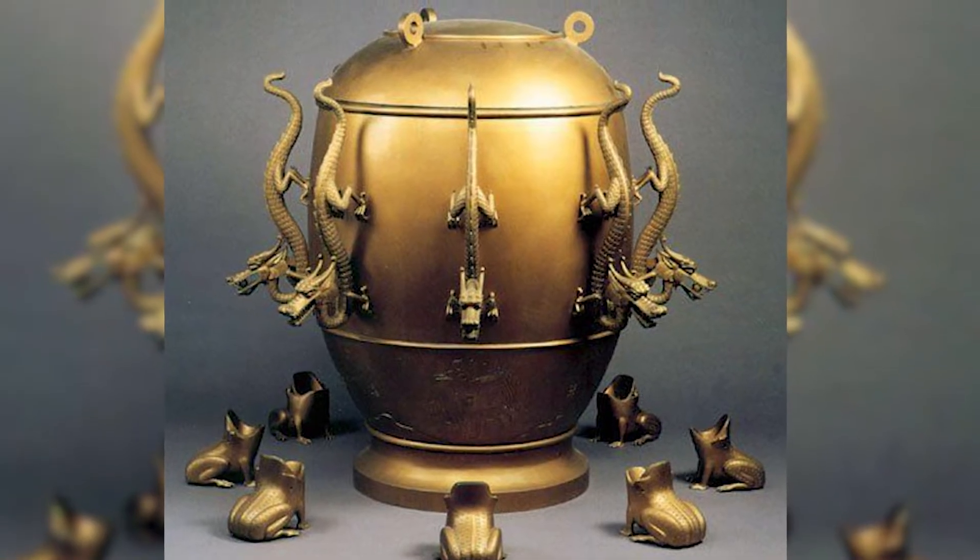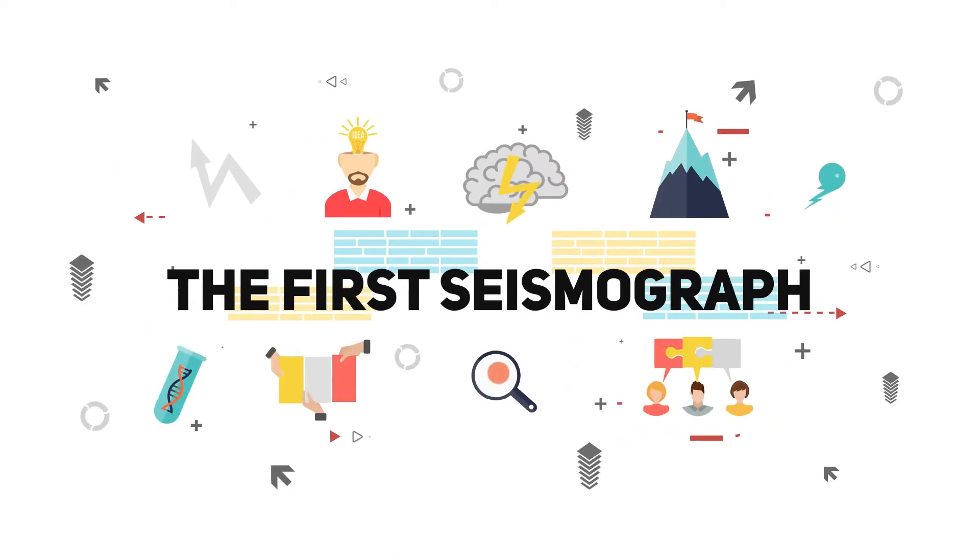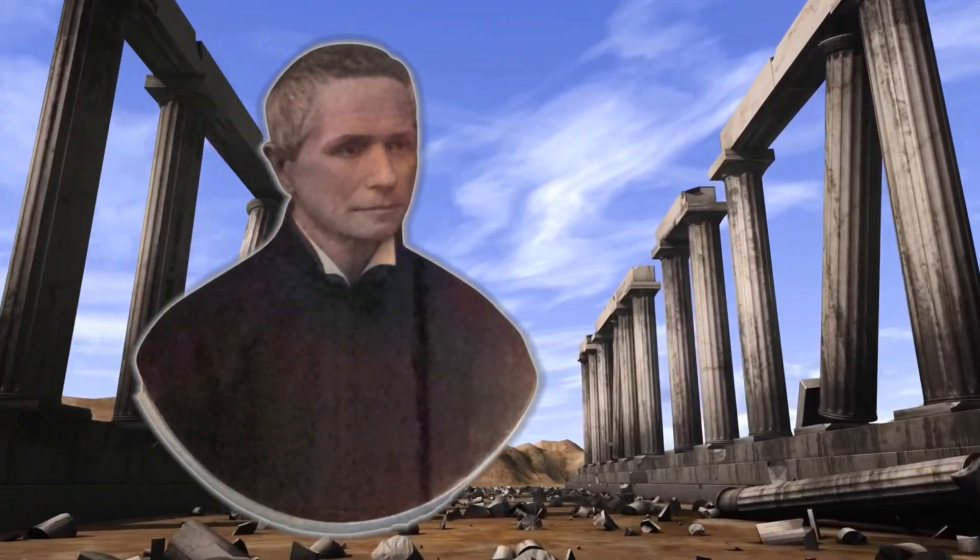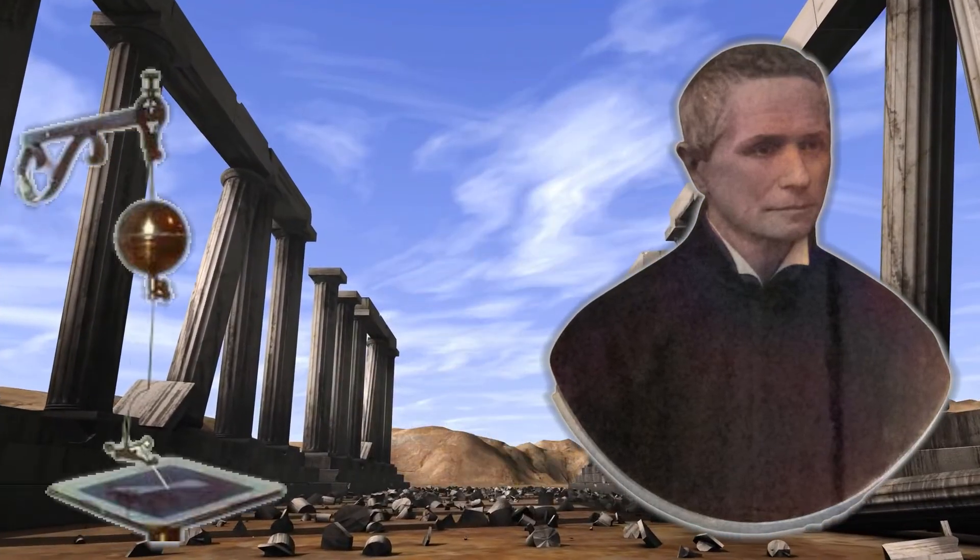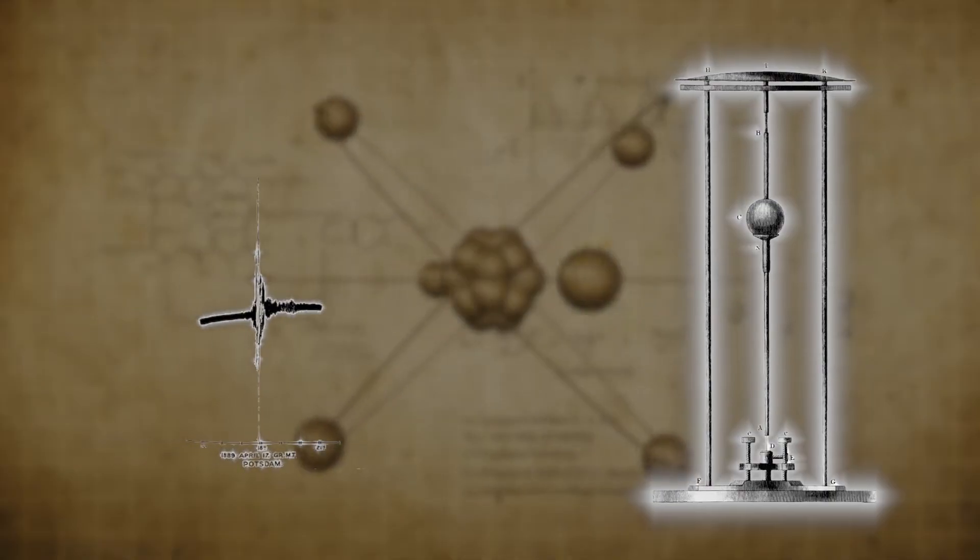The first seismograph: Fast forward to 1875, when Italian physicist Filippo Secchi built the first seismograph. This early model featured pendulums that activated a clock and a recording device to measure the duration of an earthquake.